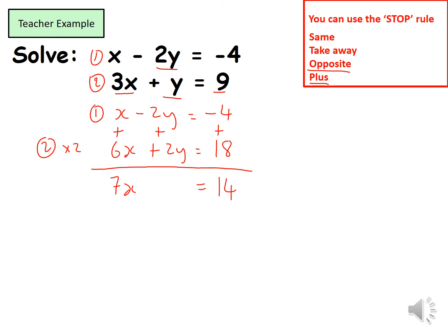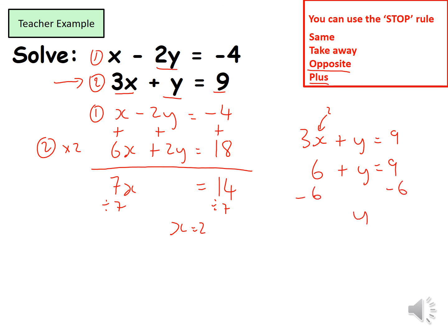To get x on its own I divide both sides by 7, giving me x equals 2. I've worked out half the question — I still need the value of y. I substitute back into equation two: 3x plus y equals 9. I know x equals 2, so 3 times 2 is 6, giving me 6 plus y equals 9. Taking 6 from both sides: y equals 3. So x equals 2 and y equals 3.